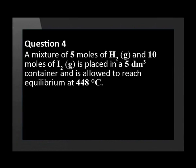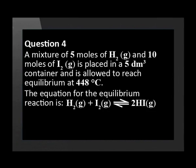A mixture of 5 moles of hydrogen gas and 10 moles of iodine gas is placed in a 5 decimeter cubed container and is allowed to reach equilibrium at 448 degrees Celsius. The equation for the equilibrium reaction is given.